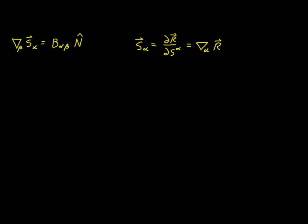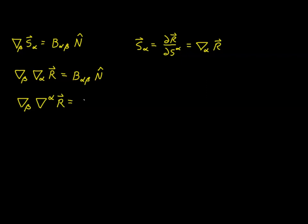Let's use this expression in place of our basis vector. We'll have the covariant derivative with respect to beta of the covariant derivative with respect to alpha of the position vector R, and that's equal to B_alpha_beta times our normal vector n-hat. Now let's raise the alpha index in both positions. We do that by contracting with the contravariant metric tensor. Since that is metronilic with respect to the covariant derivative, it applies across these operations without any problem.